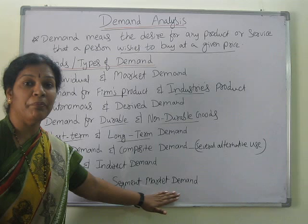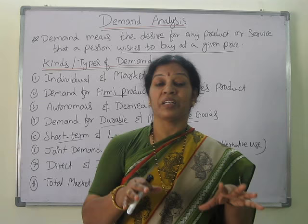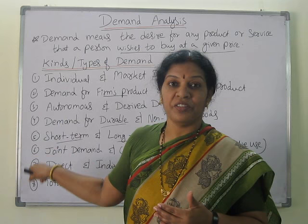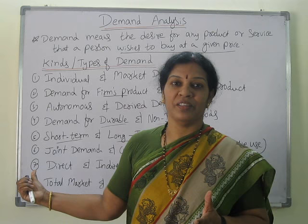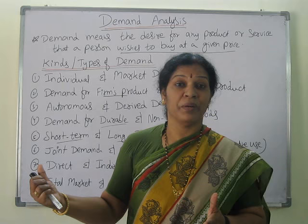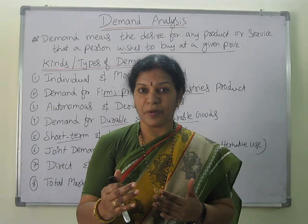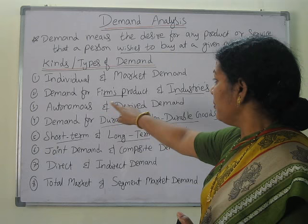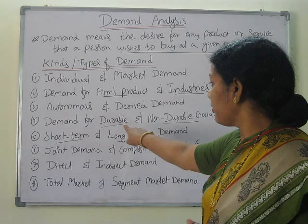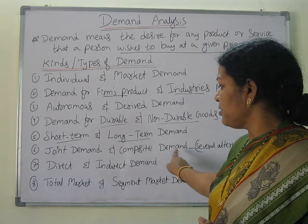So if we have an understanding of the types of demand, whenever you start a business, you will have knowledge of demand, and according to that you can go for forecasting, planning, marketing decisions, and pricing decisions. We have discussed eight types of demand: individual and market demand, demand for firms and industries, autonomous and derived demand, durable and non-durable demand, short-term and long-term demand, joint demand, composite demand, direct and indirect demand, and total market and segment market demand.